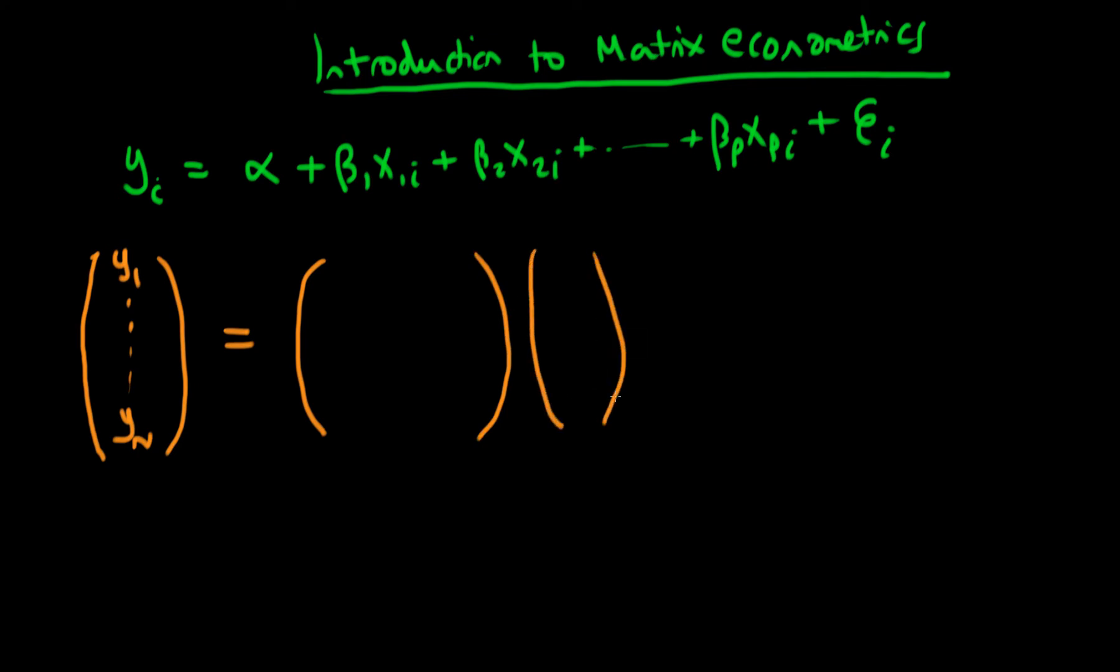So my coefficient vector beta is, in fact, in this case, going to have beta1 through betap as its components. And I'm finally going to have some sort of error here where the error has exactly the same number of dimensions as my independent variable. So I've got some error, let's keep the same notation actually, error e1 through to error en.